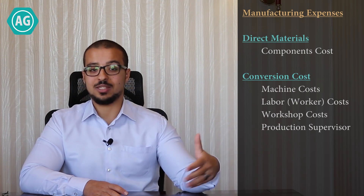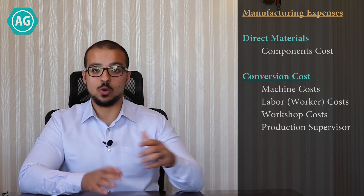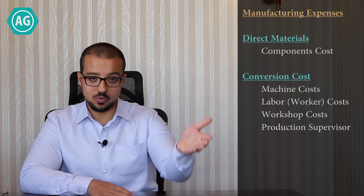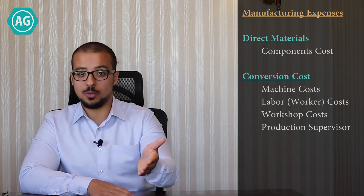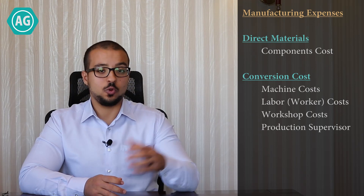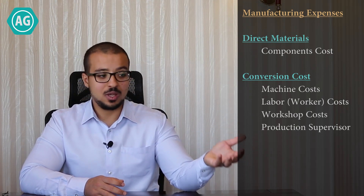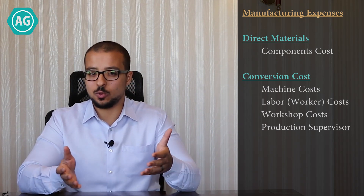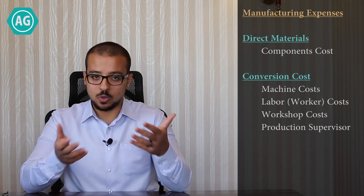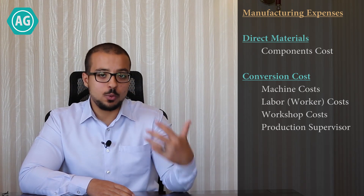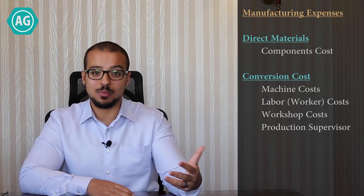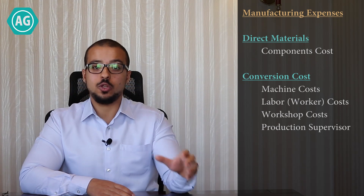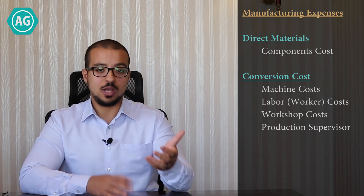In the previous video, I explained how easy it is to allocate the direct material cost. When you look at a chair, you can easily tell that we had to consume these quantities of components, and then you multiply it by the cost to get the direct material cost. But for conversion costs, it's not as easy, because conversion costs are not directly related to the product — they are actually spent over a period of time.